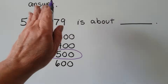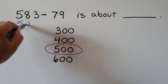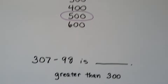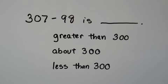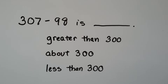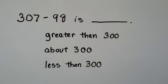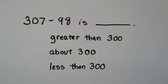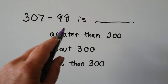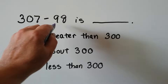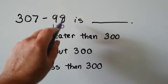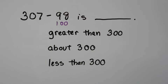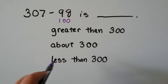It's all about estimating and rounding. Now let's try: if we have 307 and want to take away 98, do you think it'll be greater than 300, about 300, or less than 300? Look at 98 — it's really close to 100. So if we round it to 100 and estimate, what happens when we take 100 away from 307?